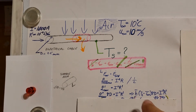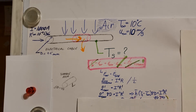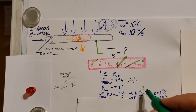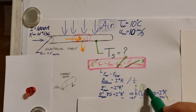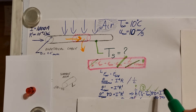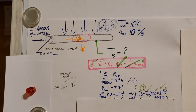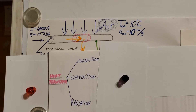Plugging in the flux formula gives h times (Ts minus T-infinity) times pi-d equals I squared R-prime. Looking at the unknowns: Ts is what we're asked to find, and h we don't know. T-infinity, pi, diameter, current, and R-prime are all known. So we have two unknowns — Ts and h — and we need to find h using a convection correlation.